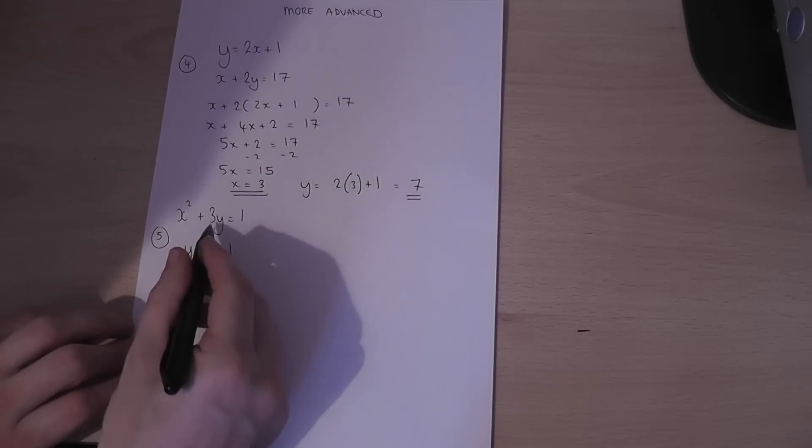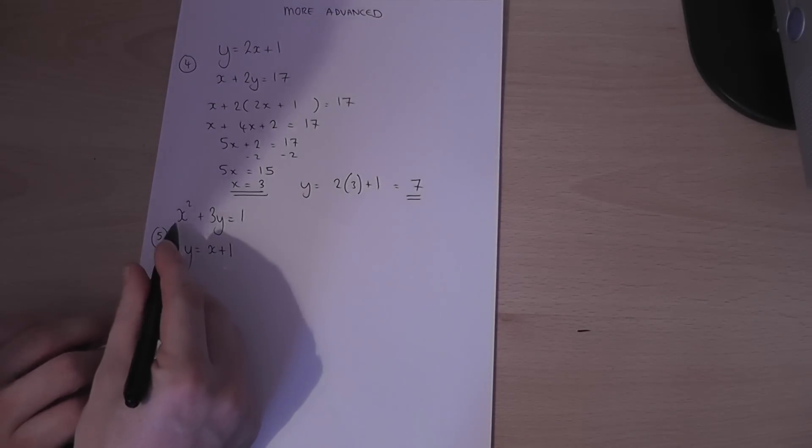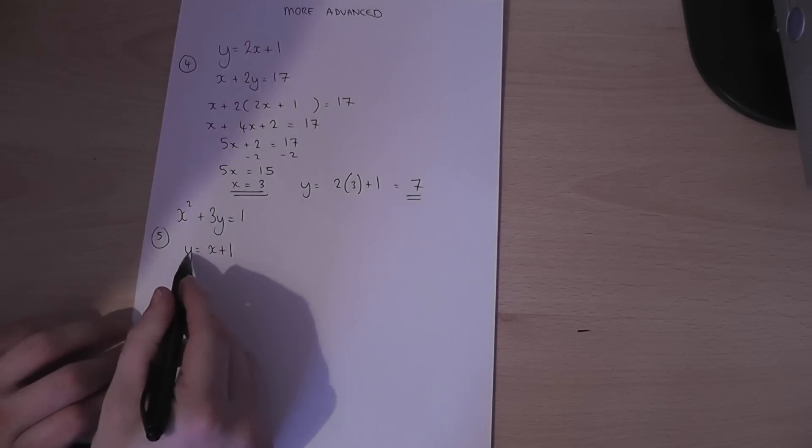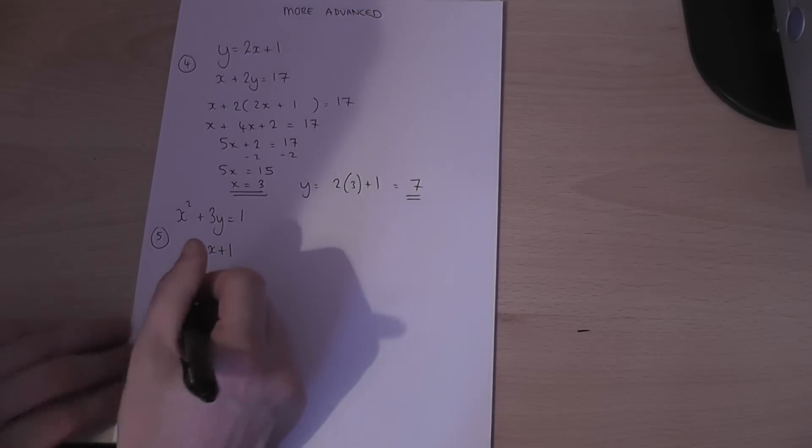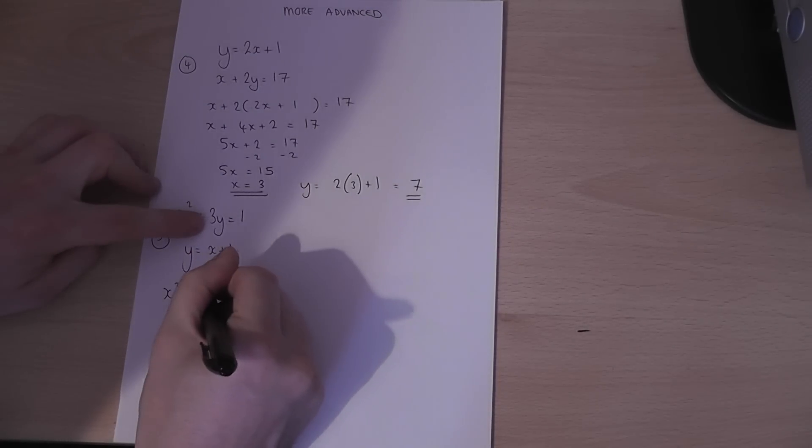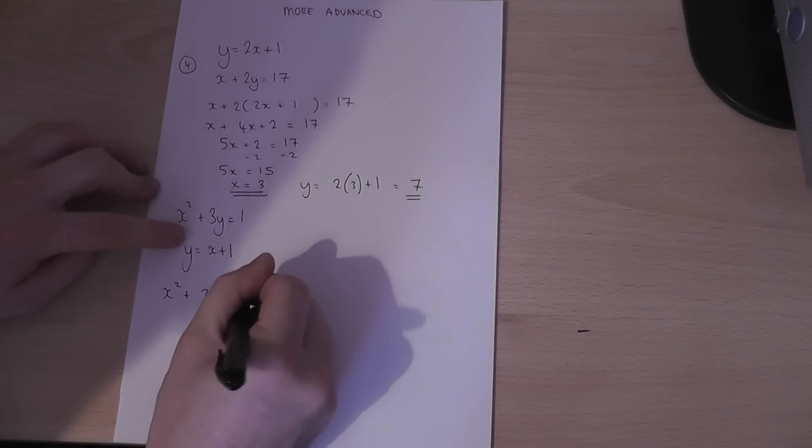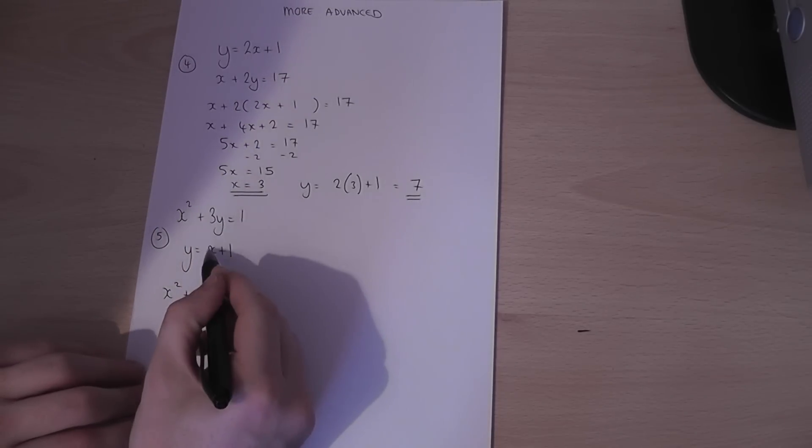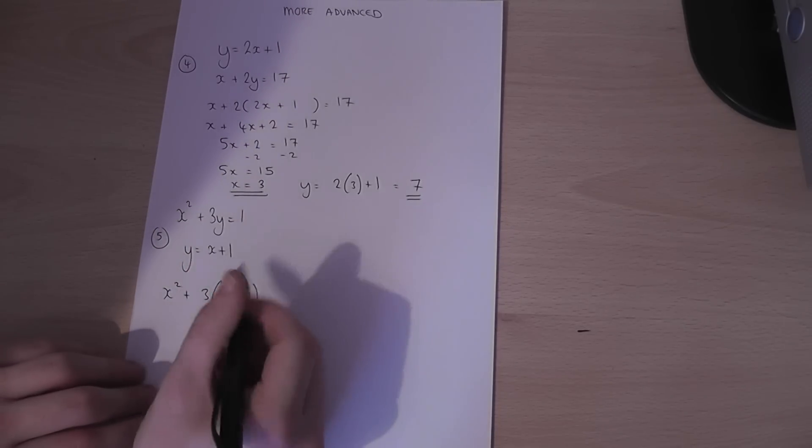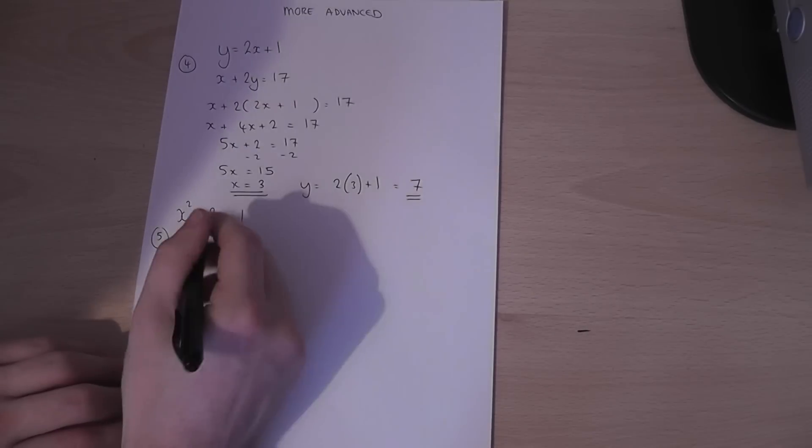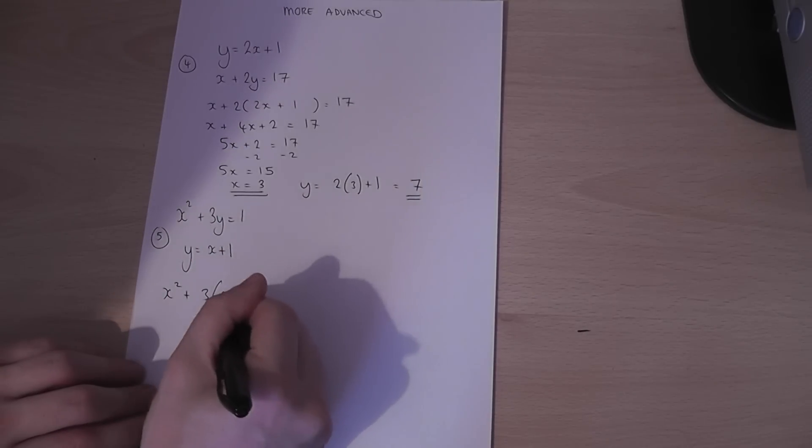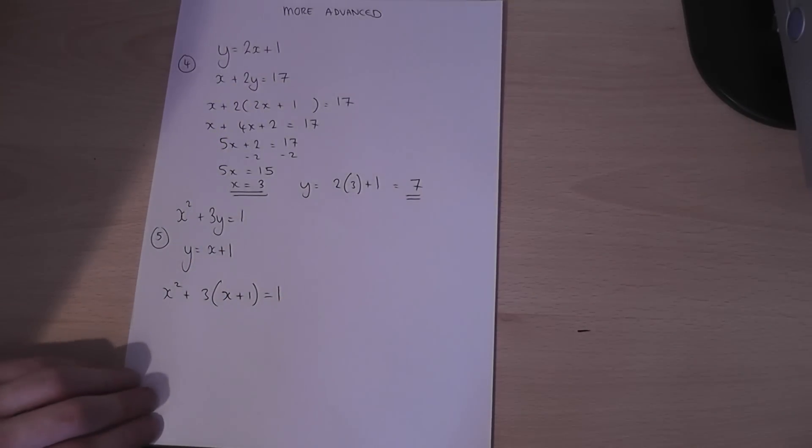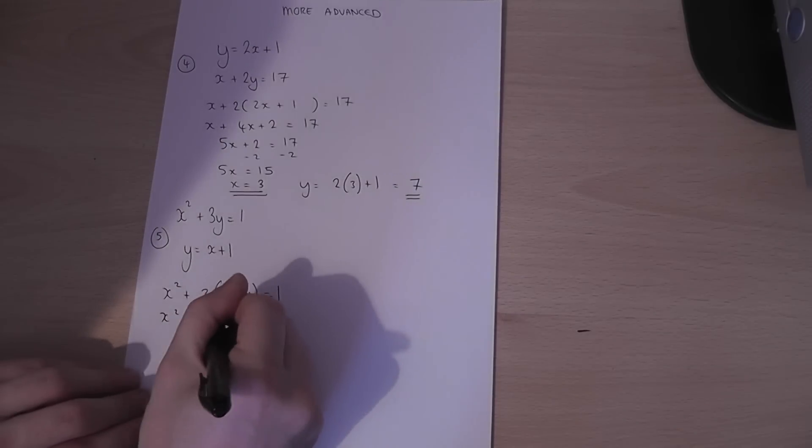The final example is similar. We have a main equation and a y equals equation. So we go to the main equation and we replace the y by whatever we're told it equals. We're told y equals x plus 1. So that y is replaced by x plus 1. So x squared plus 3 times y equals 1. I expand the equation.